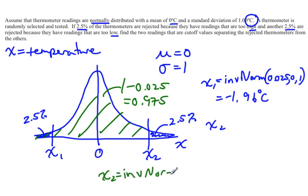To find X2, use inverse norm with 0.975, mean of 0, and standard deviation of 1. When I do that, I end up with positive 1.96 degrees Celsius approximately. That's all there is to finding this information.